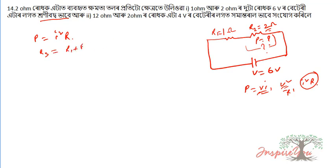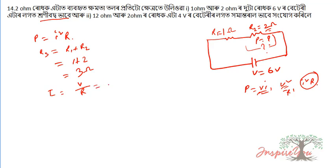R is equal to R1 plus R2, so 1 plus 2 equals 3 ohm total. I = V/R, and V is equal to 6.